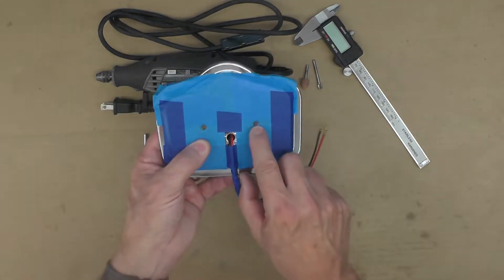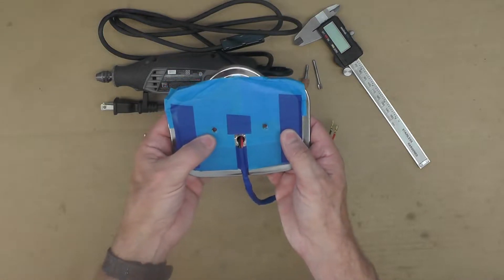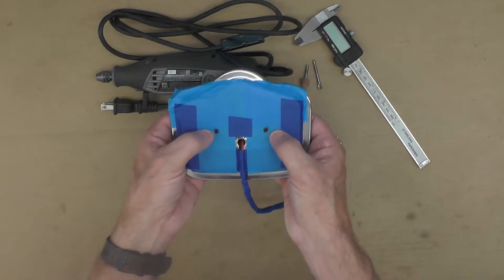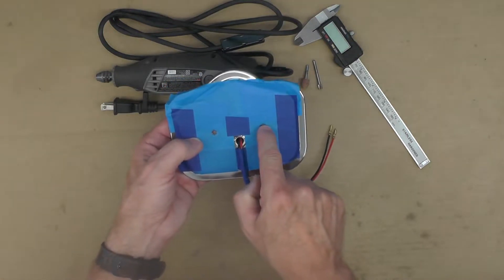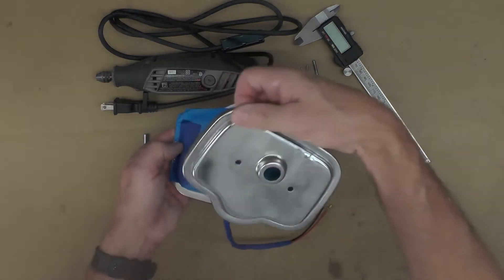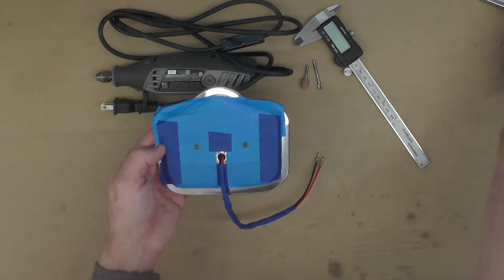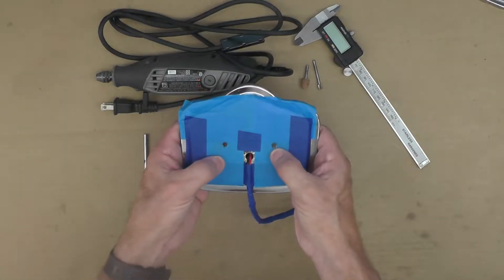Again, to reiterate, these holes right here have to be moved out a total of 10mm or 5mm per side. These are 50mm center to center. The original Suzuki part here is approximately 60mm center to center. That's where that 5mm per side comes from.